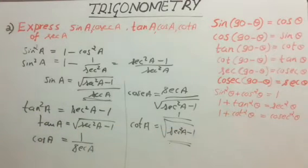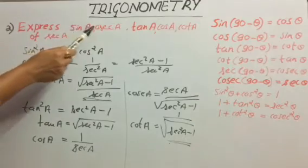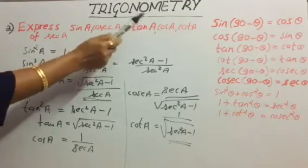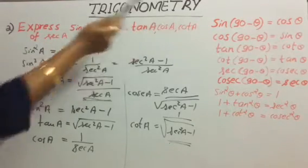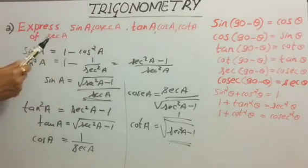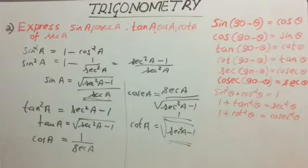Thus we can represent sin, cosecant, tan, cos, and cot in terms of secant only.